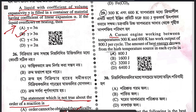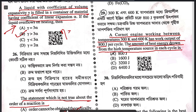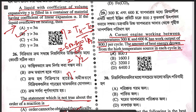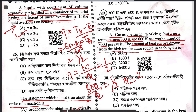Question 29: a Carnot engine working between temperatures 300 K and 600 K has a work output of 800 joules. The amount of energy drawn from the high temperature source: first calculate η = (T_hot - T_cold)/T_hot = (600-300)/600 = 1/2. Since η = W/Q, we get 1/2 = 800/Q, so Q = 1600 joules. Answer is B — 1600 joules.